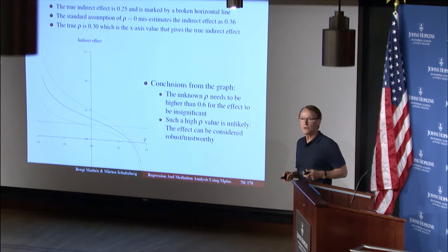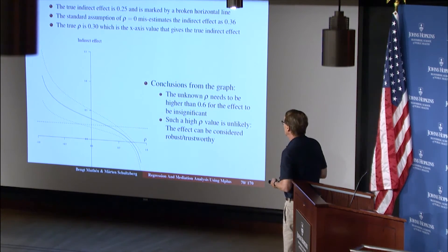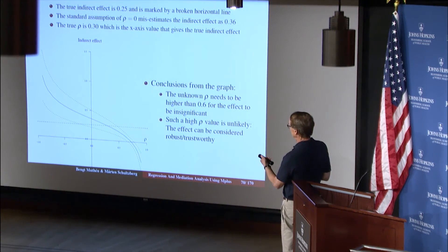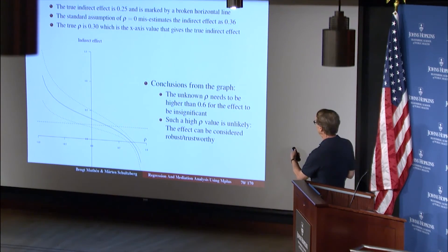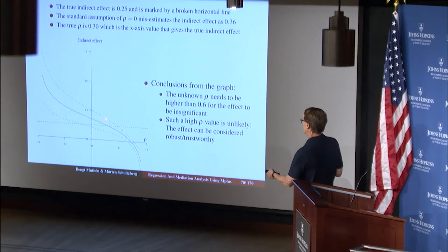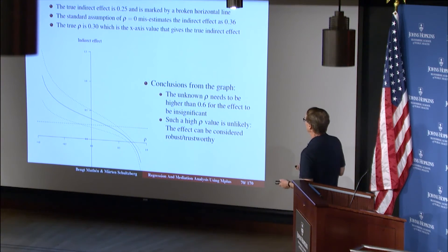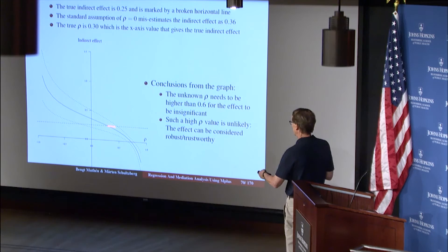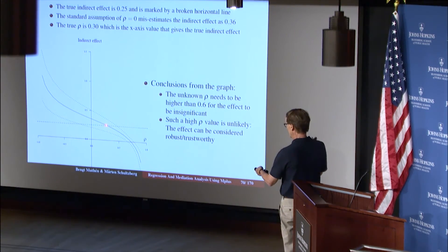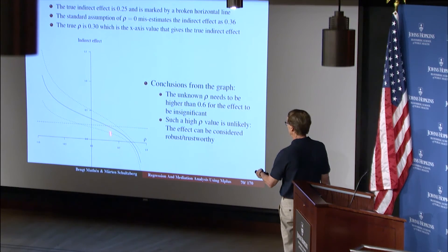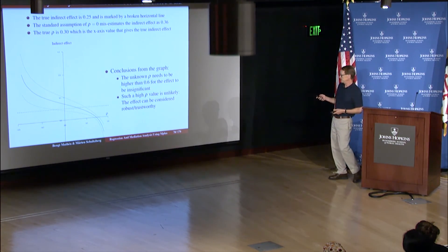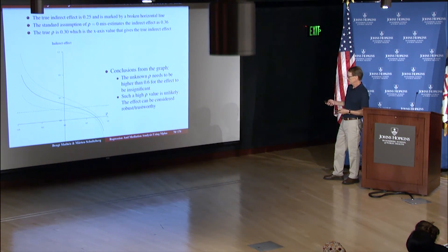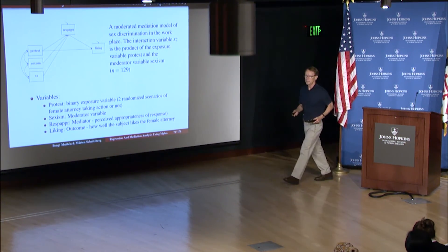So the take-home message from this graph is if you get a graph like this, you should be happy. That's a simple message. Morten will show you a graph where you're not so fortunate. But this is the steps that you take. So I actually generate, in the book I show how to generate data with a true rho of 0.30 and then analyze it by the standard assumption and you get a misestimated indirect effect of 0.36, whereas the true indirect effect is 0.25, which you would get if you happen to guess true rho value 0.30, but you don't. So now you know how to reason about this and how to do a sensitivity analysis and how to interpret the graph.